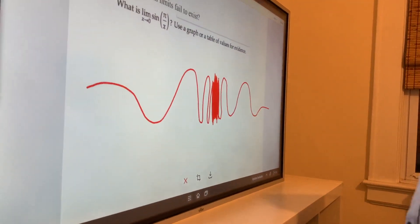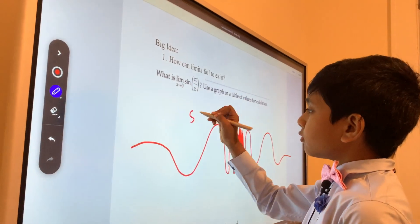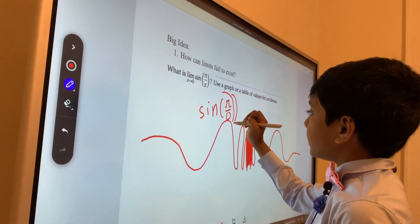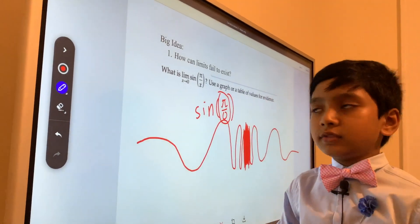But then it slowly decreases frequency and slowly goes back to being a normal wave. So the thing is here, though, when you plug in zero for x, you get a fraction with the denominator of zero.